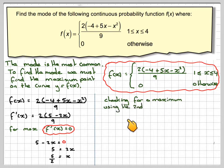Checking for a maximum using the second derivative test, then f''(x) equals 2/9, and the differential of 5 is nothing, the differential of −2x is −2, which is always going to be negative for all real x.